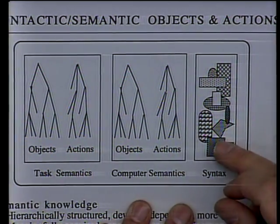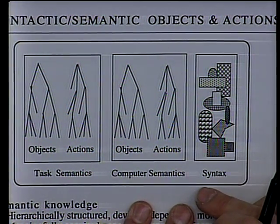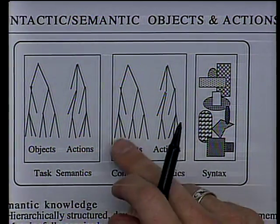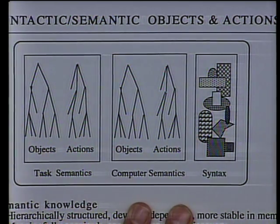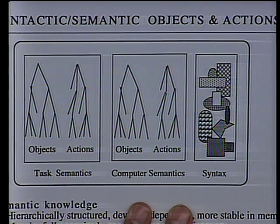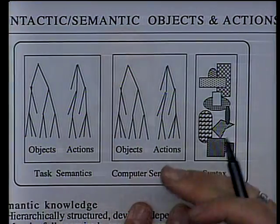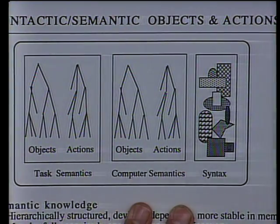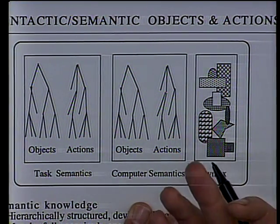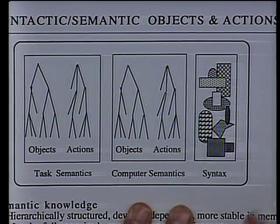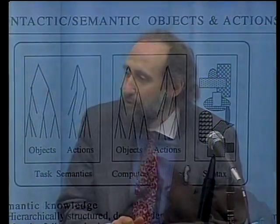The computer semantics are concepts about the objects in the computer: pages, sites, and actions. What can I do? Can I go backwards? Can I go forwards? Can I search? What do I do on the computer?